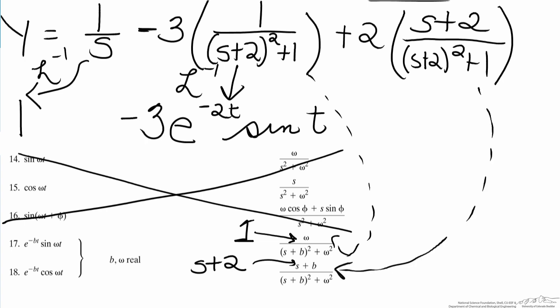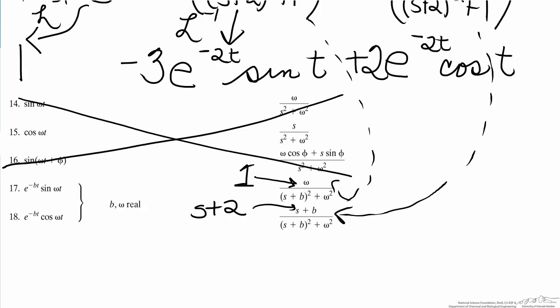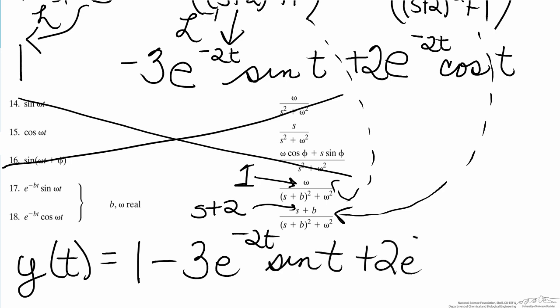So for our third term it will correspond to the cosine term, which will be e to the negative bt, which is still 2, multiplied by cosine of omega t, which in this case is still 1. We then add the coefficient to our system, and when we put these all together we get our final answer, which is that y in the time domain equals 1 minus 3e to the negative 2t sine t plus 2e to the negative 2t cos t.